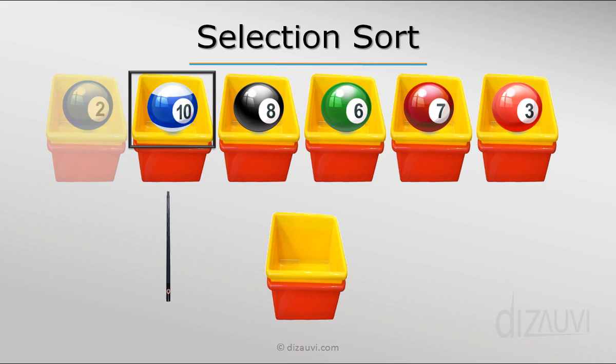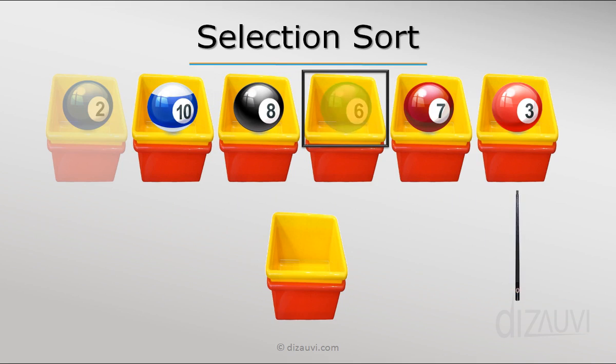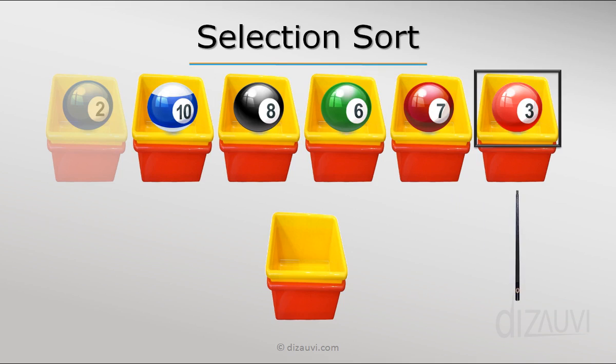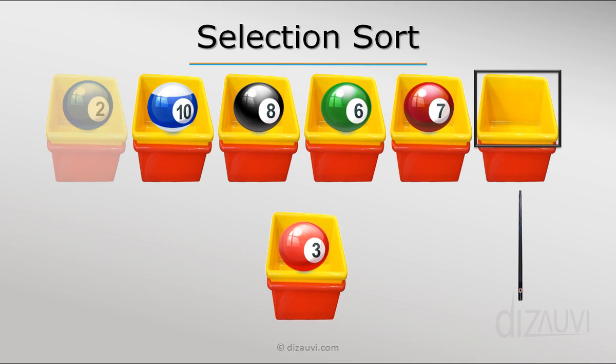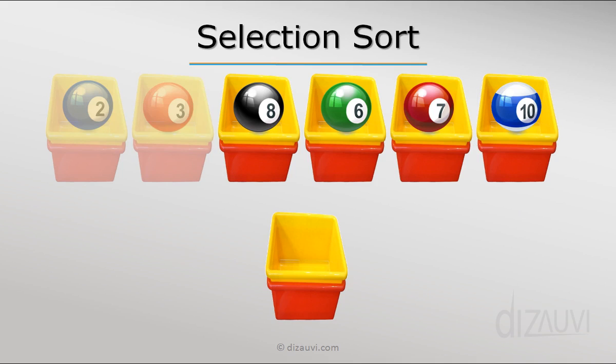In the next iteration we do exactly the same thing with the remaining array. That is, starting from the second position, we search for the cue ball with the smallest number out of the remaining ones and when we find that we swap it with the ball in the second bin. So now the ball with the next smallest number is in the second bin. So the first two bins are sorted and we keep repeating this process.